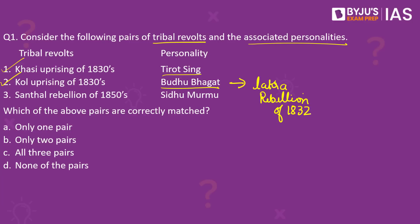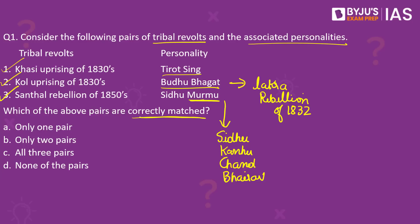Moving on to the third tribal revolt — the Santal Rebellion, also known as the Santal Hool. This rebellion took place in present-day Jharkhand and was directed against the British East India Company as well as the Zamindari system. It was led by the Murmu brothers, which included Sidhu, Kanu, Chand and Bairab. So the third pair is also correctly matched. Since the question asked for the correctly matched pairs, the answer to this question would be option C — all three pairs.